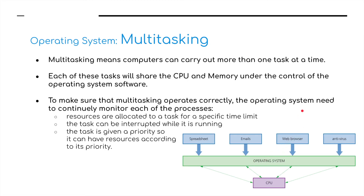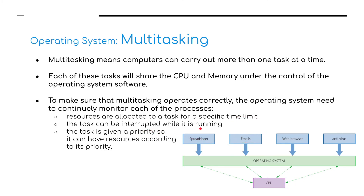Multitasking means computers can carry out more than one task at a time. Each of these tasks will share the CPU and memory under the control of the operating system. To make sure that multitasking operates correctly, the operating system needs to continue monitoring each of the processes. Resources are allocated to a task for a specific time limit, the task can be interrupted while it is running, and the task is given a priority so it can have resources allocated according to its priority.